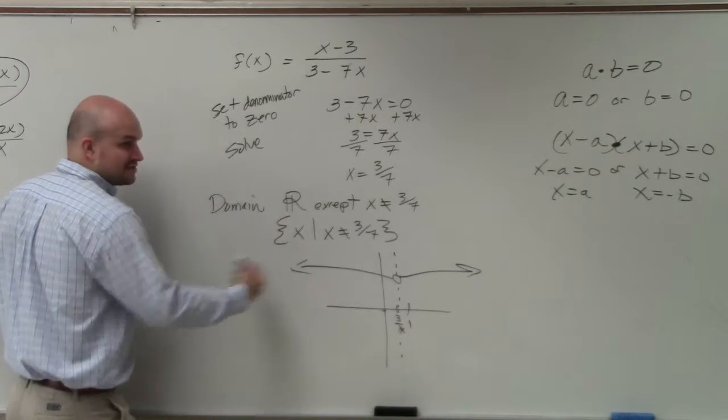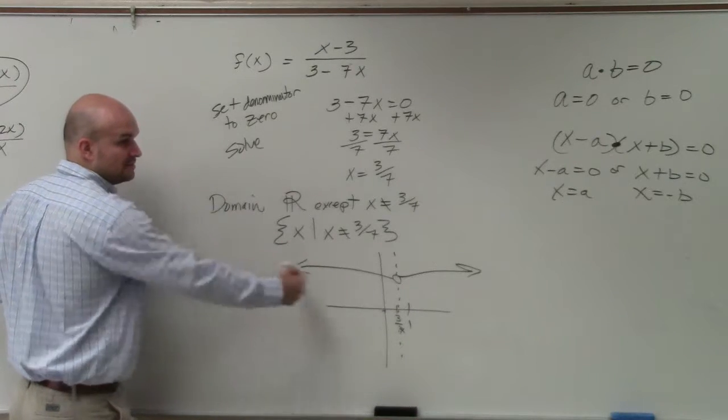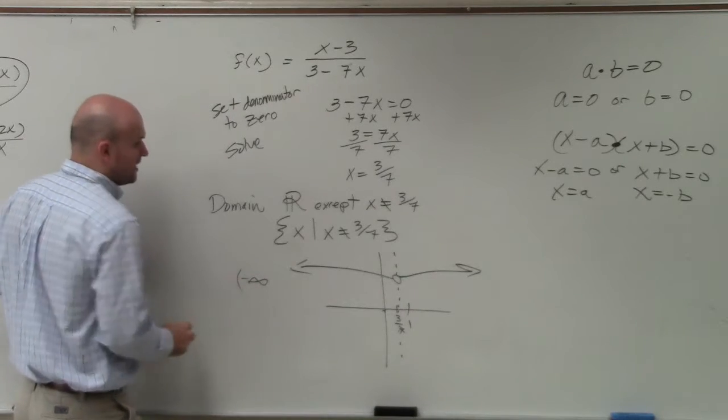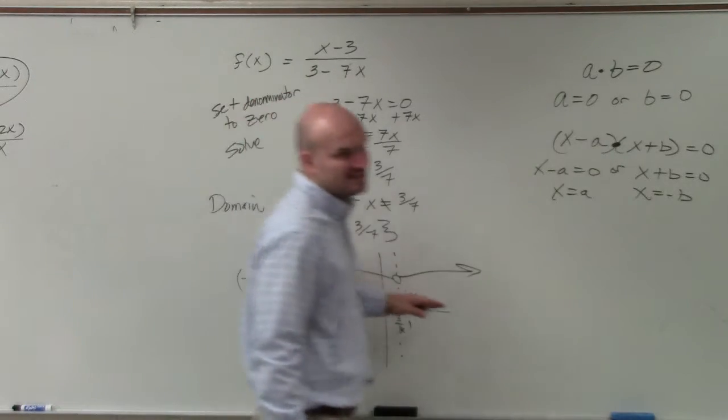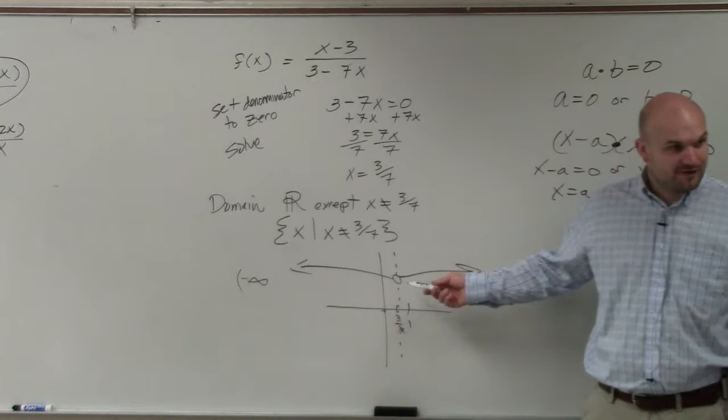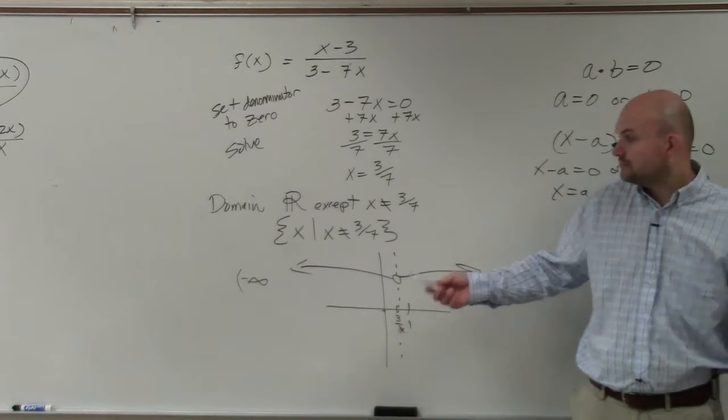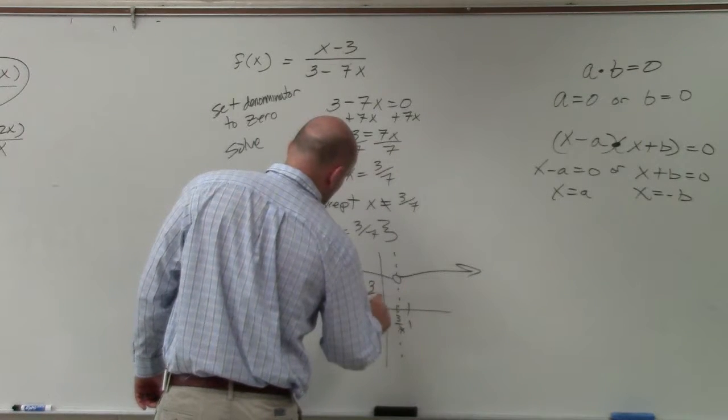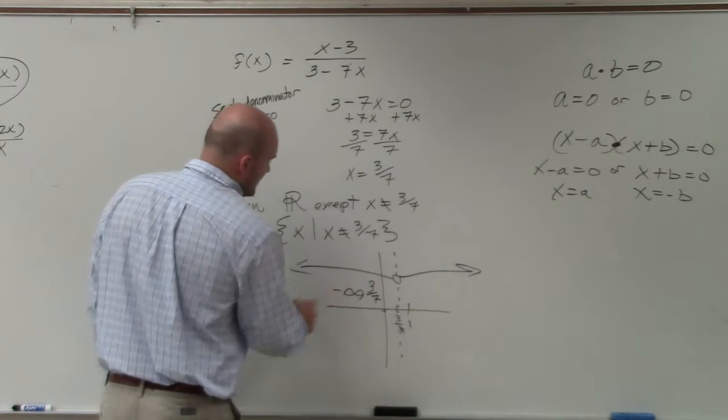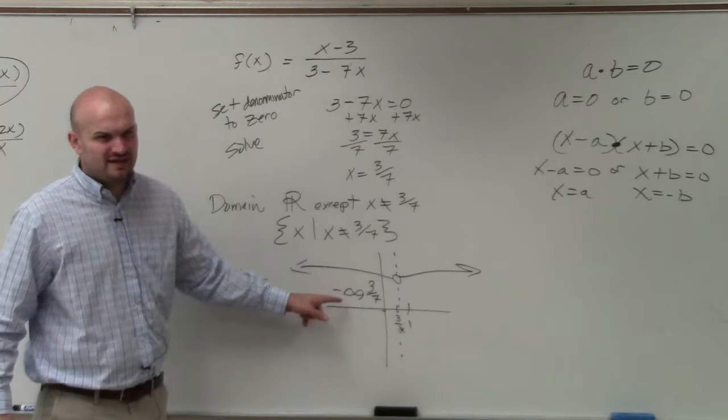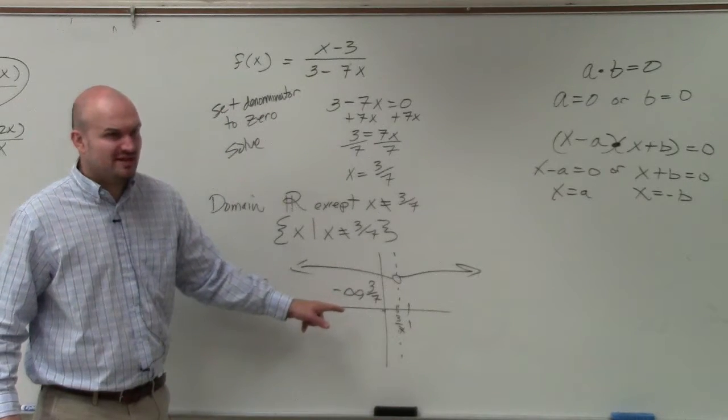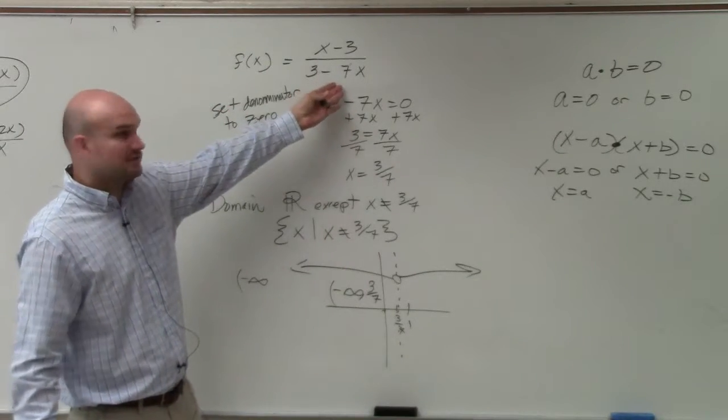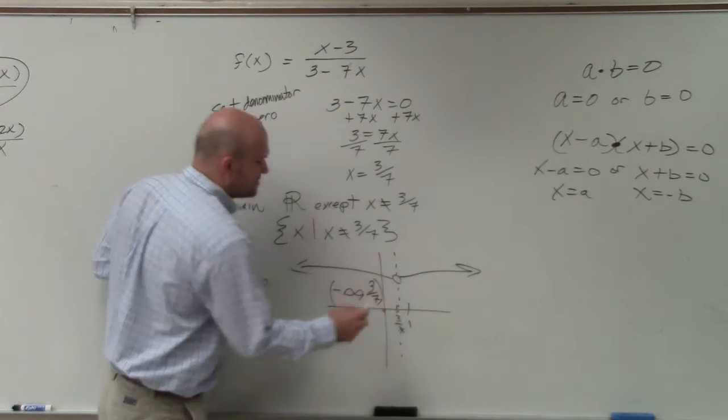So how far to the left is this graph going to go, Trevor? How far left is this graph going? Negative infinity, right? OK, and then how far does it go until it kind of stops and comes up, Keith? How far does it go to? 3 sevenths. So you could say negative infinity to 3 sevenths, all right? Now, can you equal negative infinity? Can you have negative infinity amount of anything? No. We know it can't equal 3 sevenths because it would be 0. So that's a parentheses.